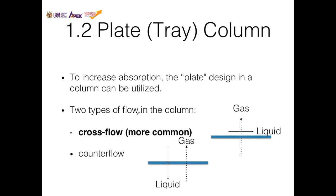There are mainly two types of flow in a tray column design: cross flow and counter flow, where cross flow is more common. Imagine a tray with holes — gas moves upward through the holes while liquid flows across the tray from left to right. The gas bubbles through the liquid, and some gas is absorbed through mass transfer. Because of this cross direction, it is called cross flow.